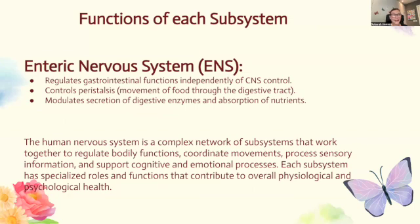The enteric nervous system regulates gastrointestinal functions independently of CNS control. It controls peristalsis — that's the movement of food through the digestive tract — and it modulates secretion of digestive enzymes and absorption of nutrients. The enteric nervous system really does have to do with gut health and your gastrointestinal system. Basically, the human nervous system is a complex network of subsystems that work together to regulate bodily functions, coordinate movements, process sensory information, and support cognitive and emotional processes. Each subsystem has specialized roles that contribute to the overall physiological and psychological health of the individual.